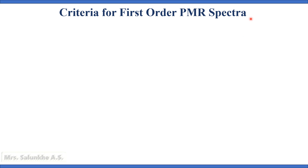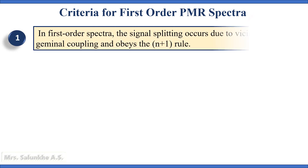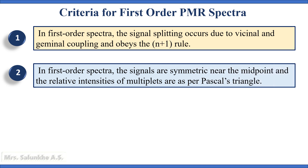First we see the criteria for first order PMR spectra. In first order spectra, the signal splitting takes place due to vicinal and geminal coupling and it obeys the N plus 1 rule, where N is the number of non-equivalent adjacent protons.